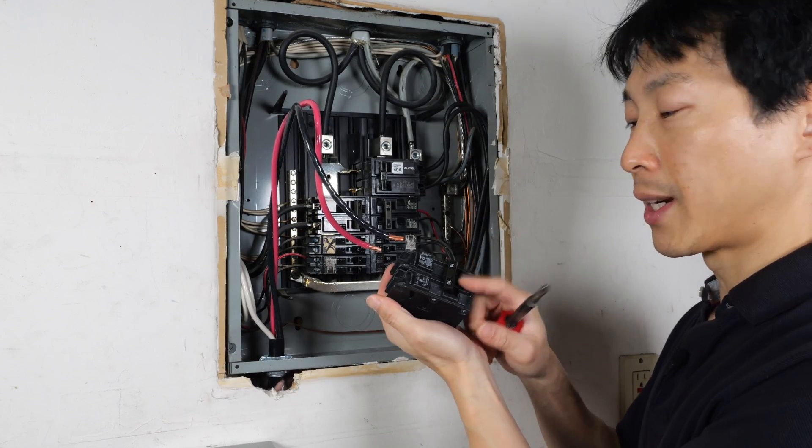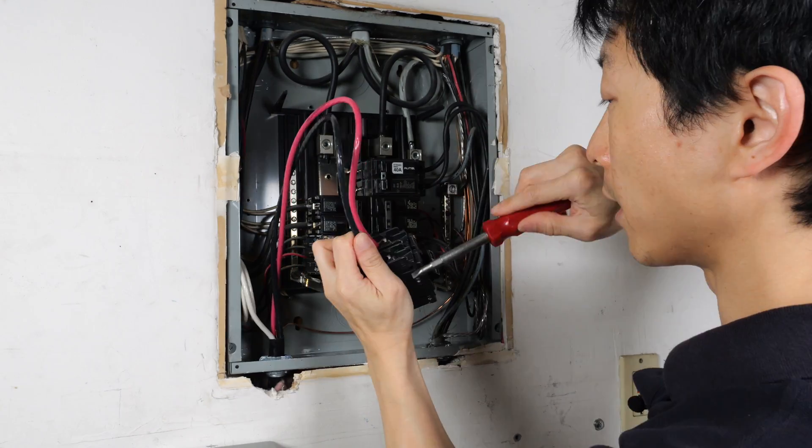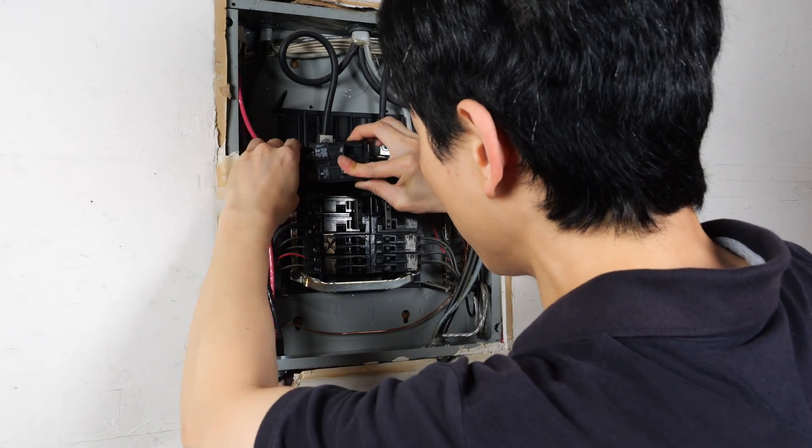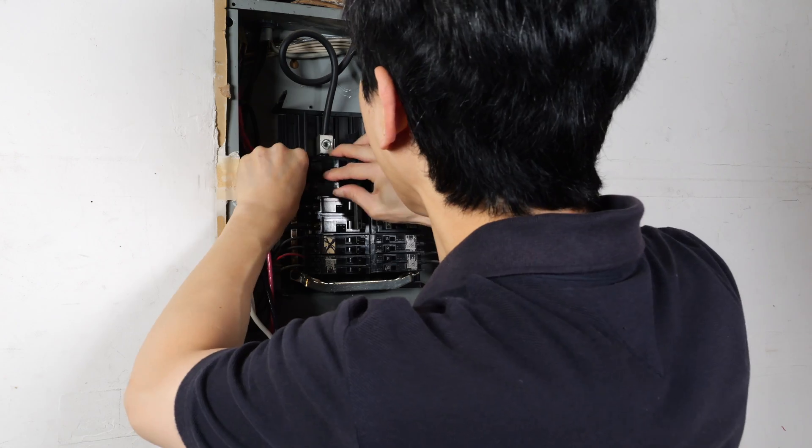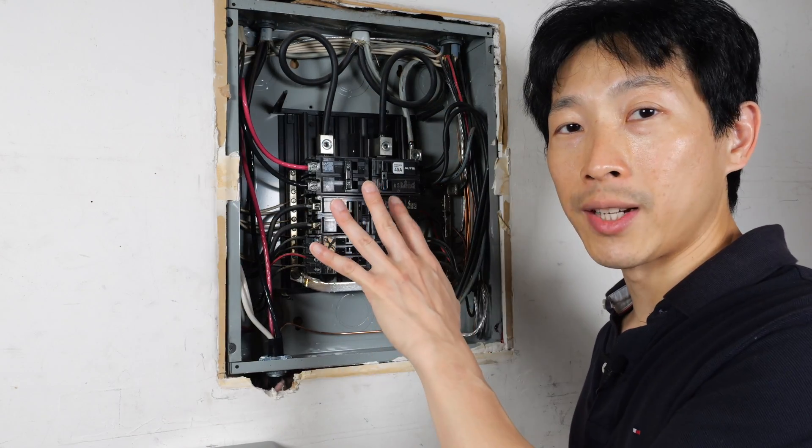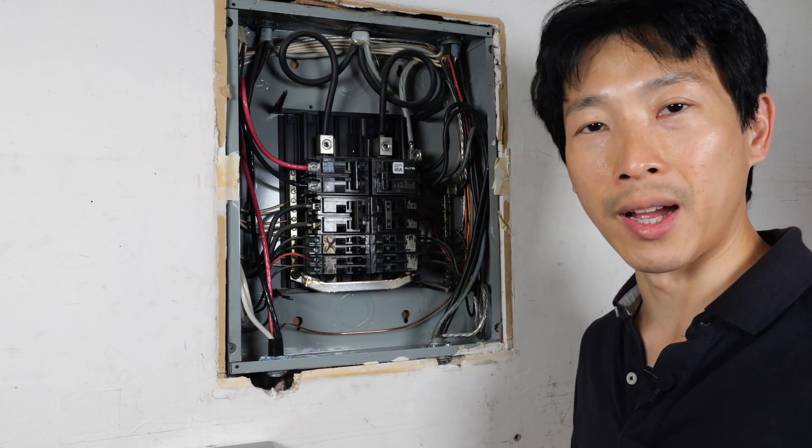I already pre-stripped this so I'm gonna connect it to the breaker. L1, L2. This is in the off position. Push it in. Okay now we can energize it. Nothing happens. Okay this is a good sign.